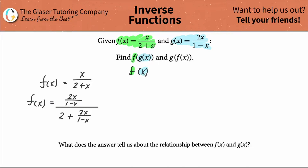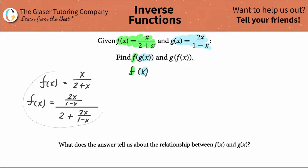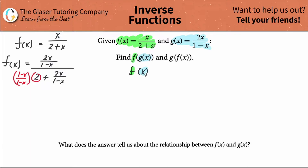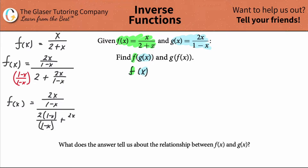Now what we should do is try to simplify this. I'm going to try to combine the two terms in the denominator to create one solid fraction. To add these two terms, I need common denominators, so I multiply the value two by one minus x over one minus x. So f of x equals two x over one minus x, all over two times one minus x over one minus x, plus two x over one minus x.